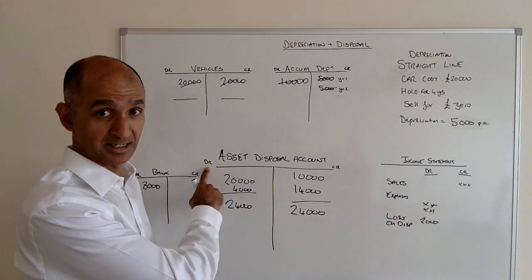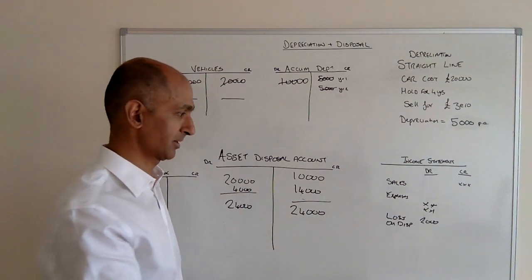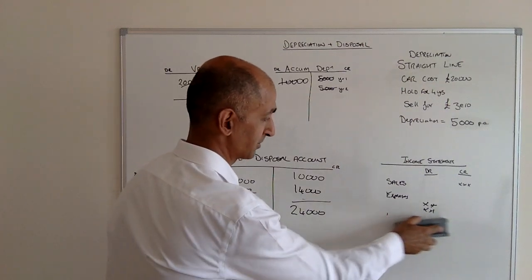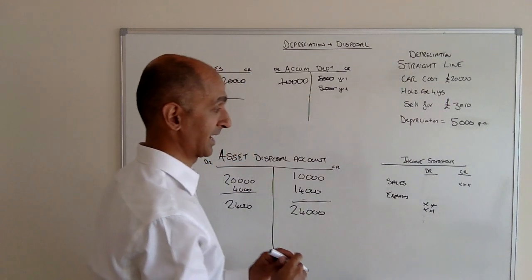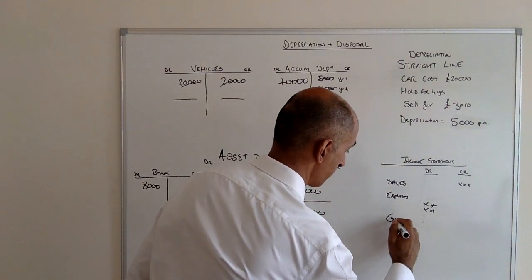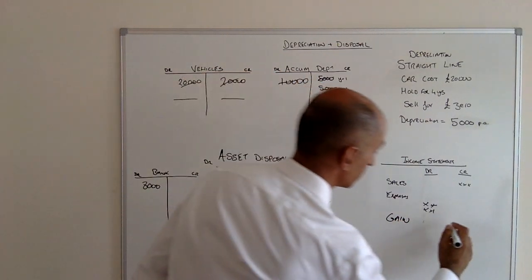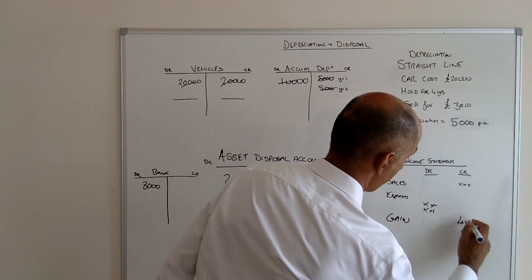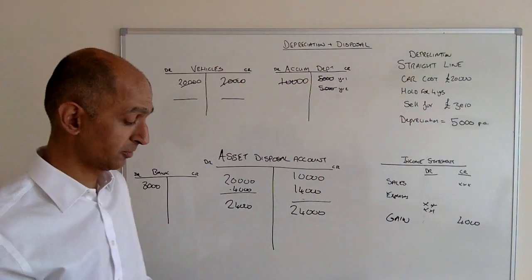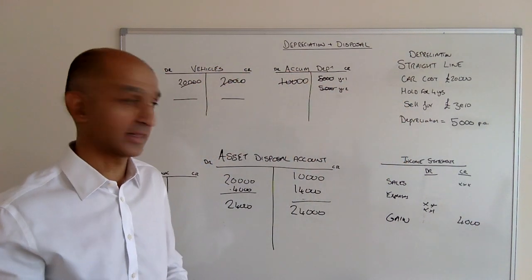Because we've debited the asset disposal account, we credit the income statement. If we're crediting the income statement, that's a gain on sale—gain on sale of £4,000. That's ultimately going to improve the profitability of the company at the end of the year.